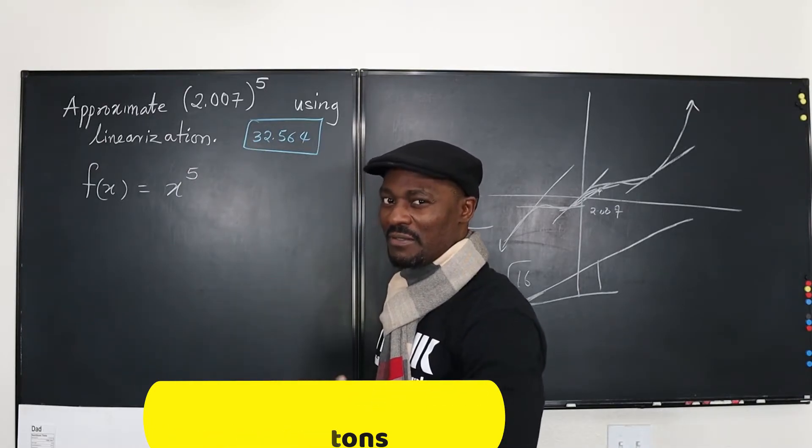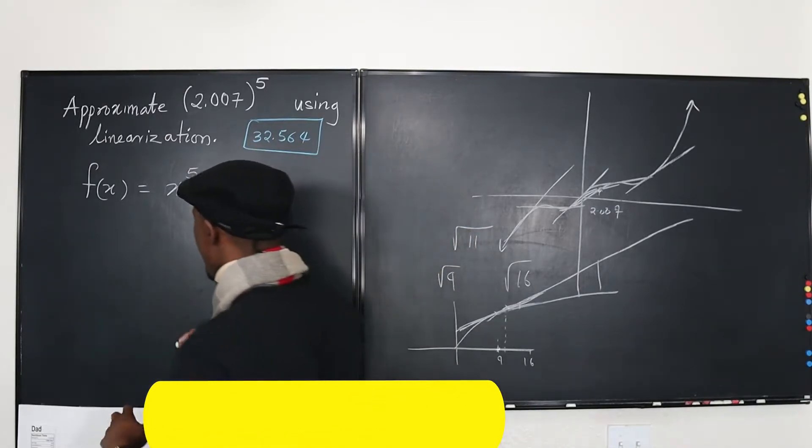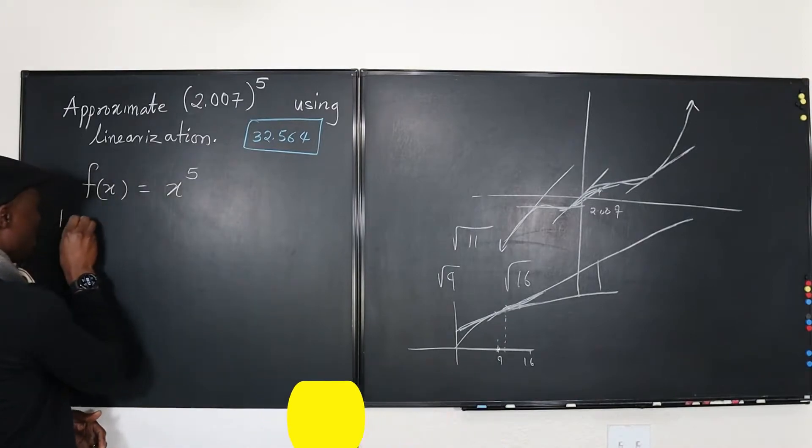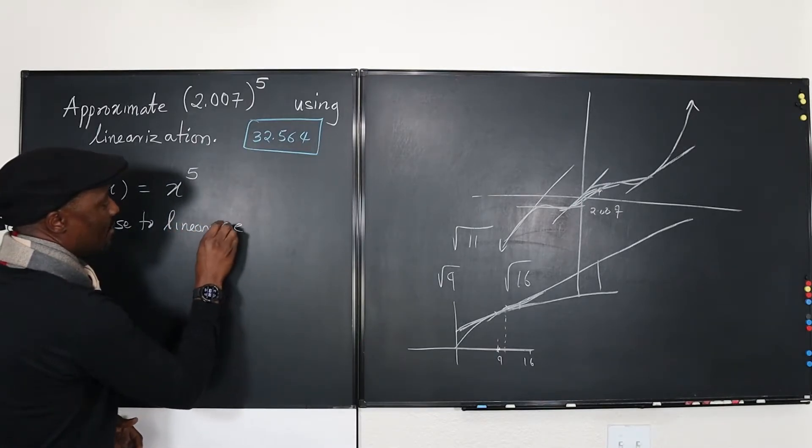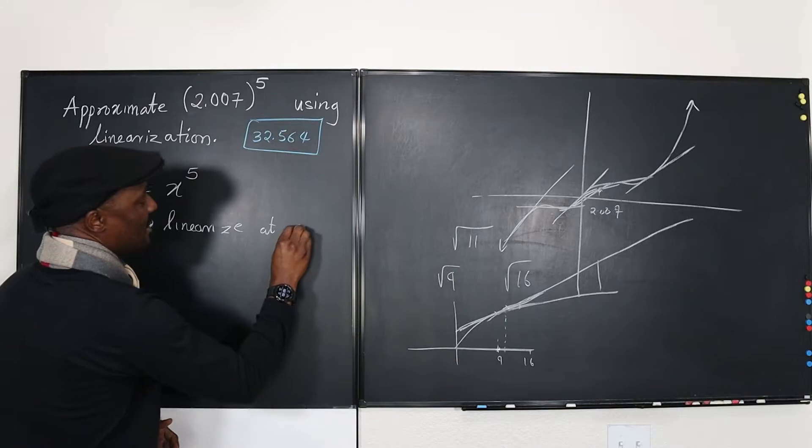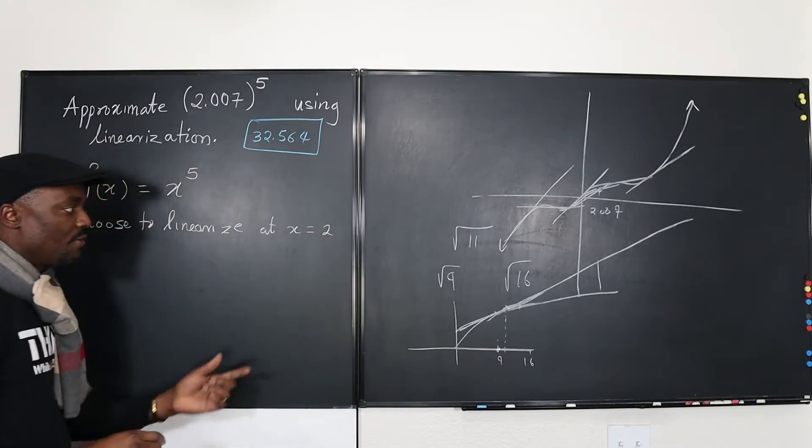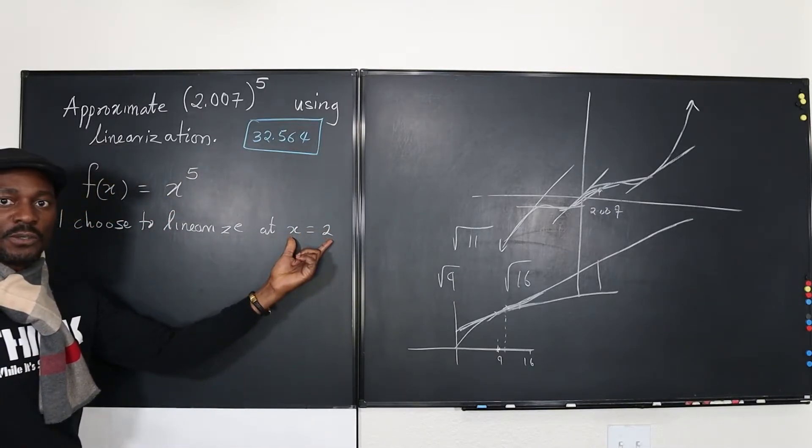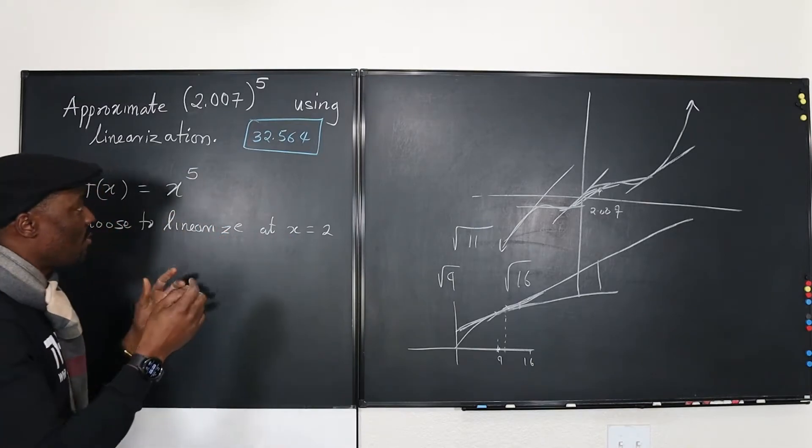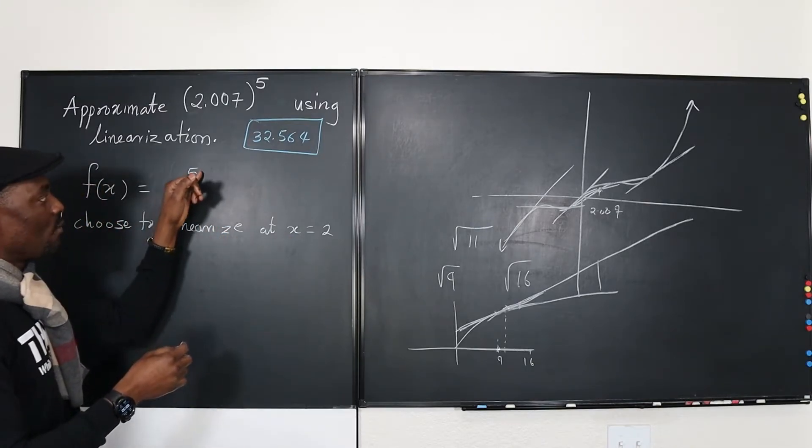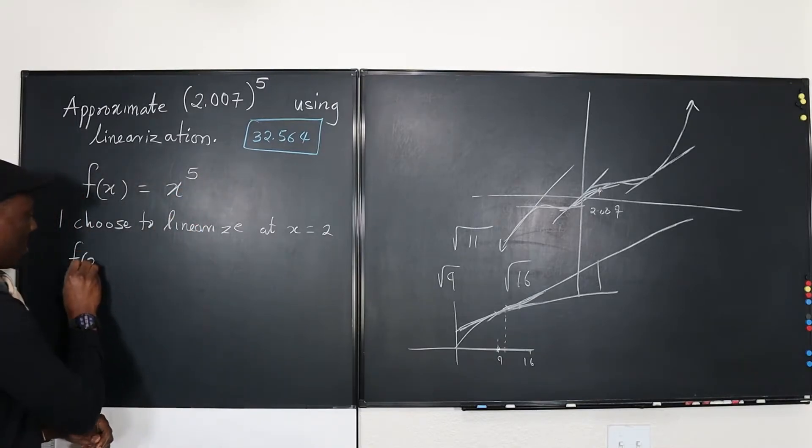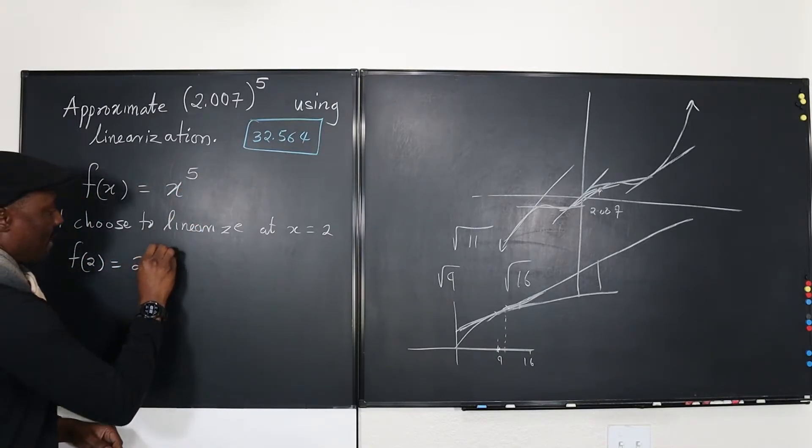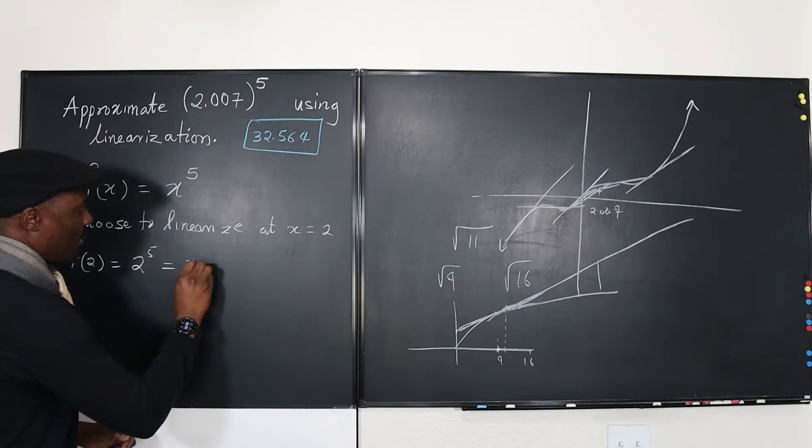So 2.007 is very close to 2. So I'm going to say, I choose to linearize at x equals 2. So if you linearize at x equals 2, then the point in the picture will be when x equals 2 and y will be 2 to the fifth, which will be, that is, f(2) is going to be 2 to the 5 and that will be equal to 32.